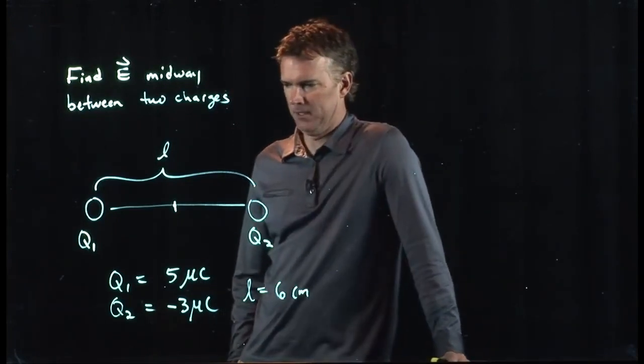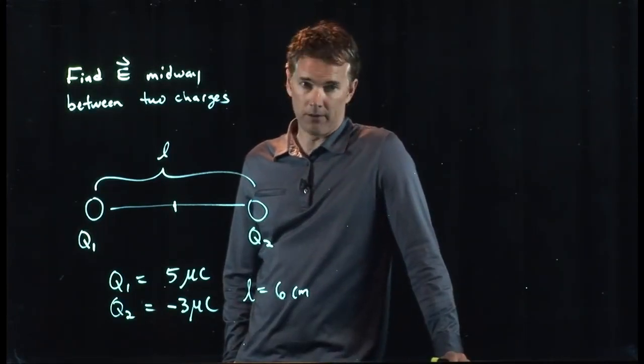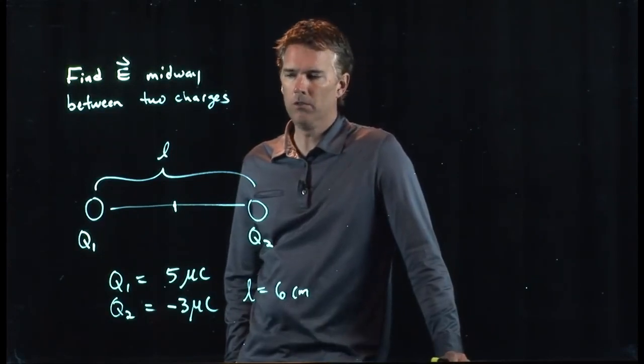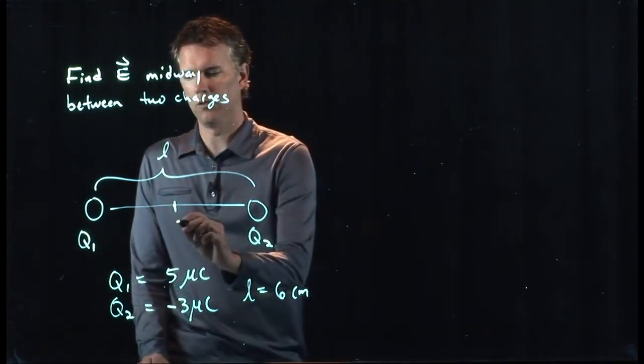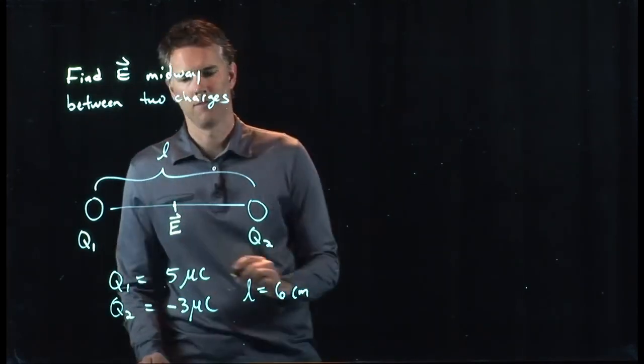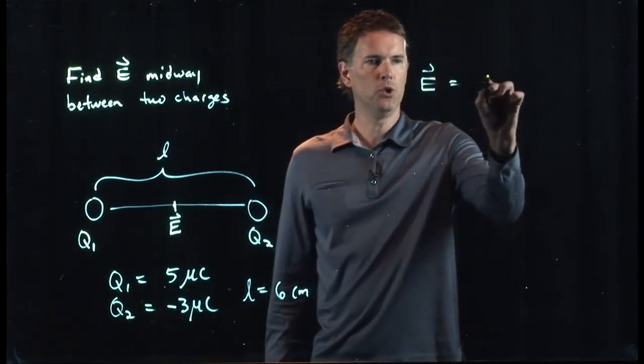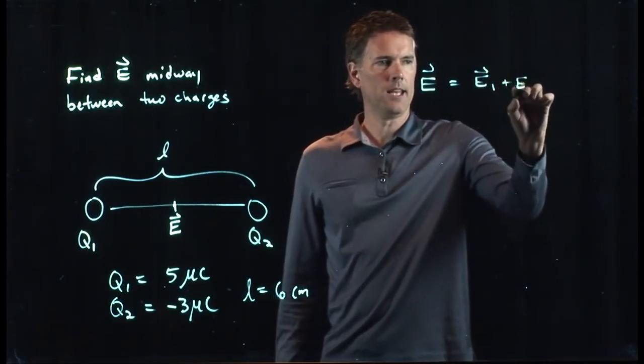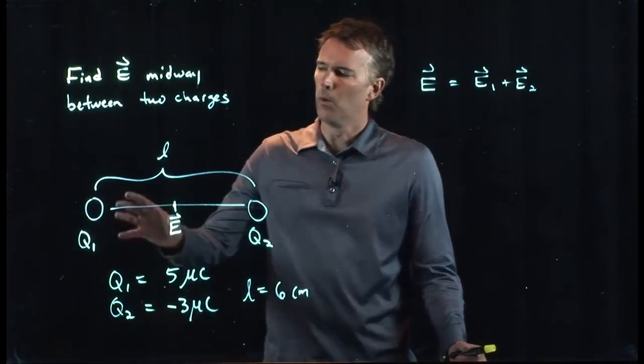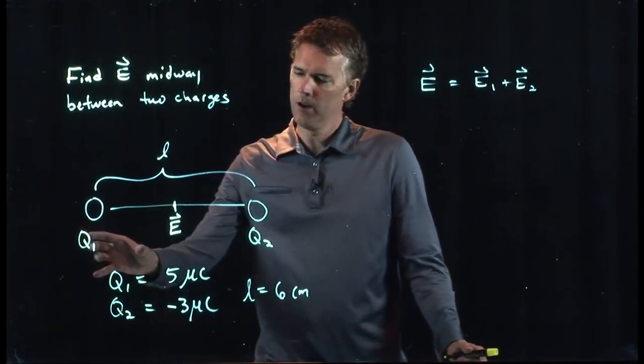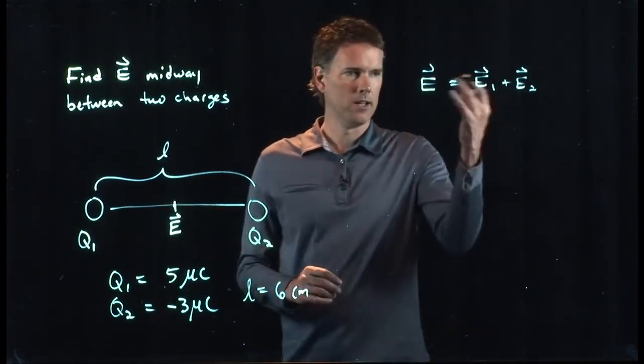How do we do this? Well, E fields are vectors and we can use the principle of superposition to figure out what the E field is right here. The E field is going to consist of two E fields, E1 and E2. All we have to do is figure out what the E field is due to Q1, what the E field is due to Q2, make sure we get the directions right, and add them up.